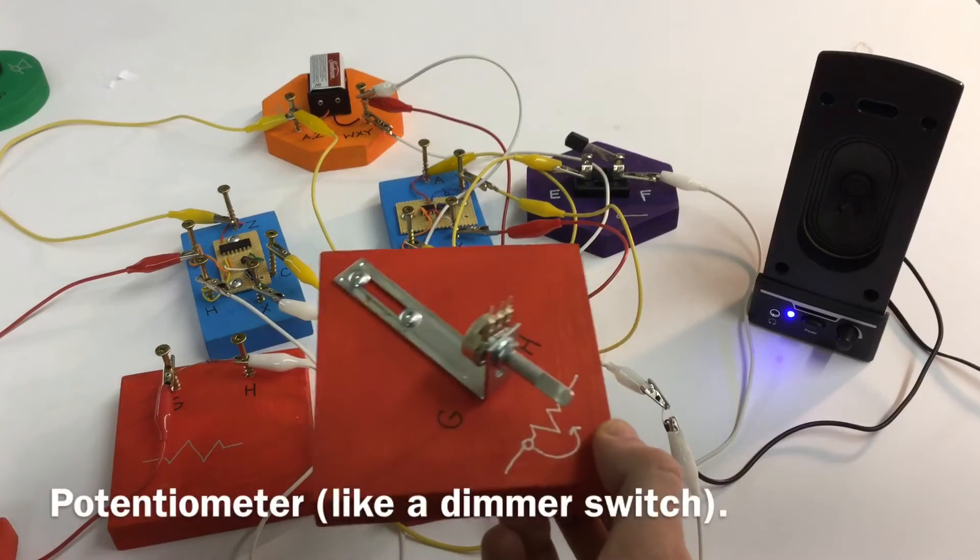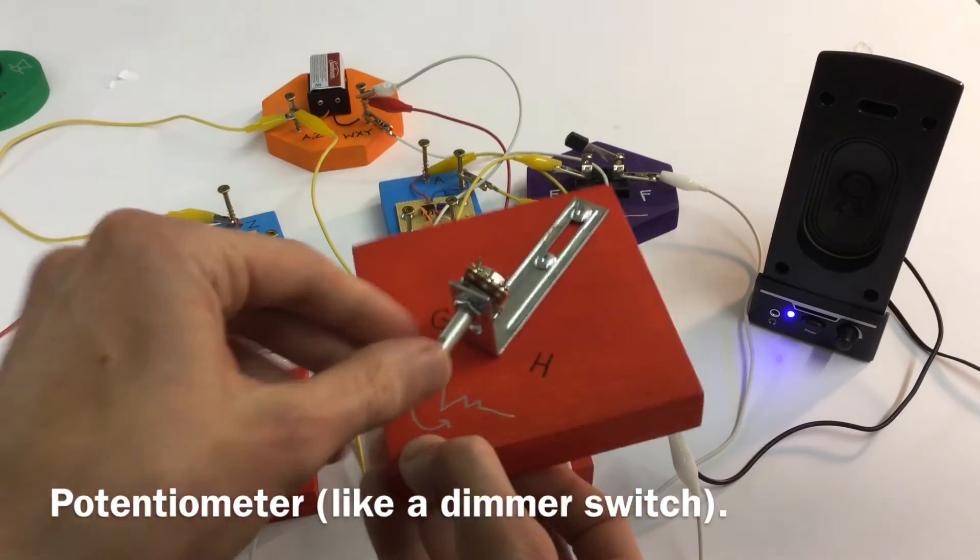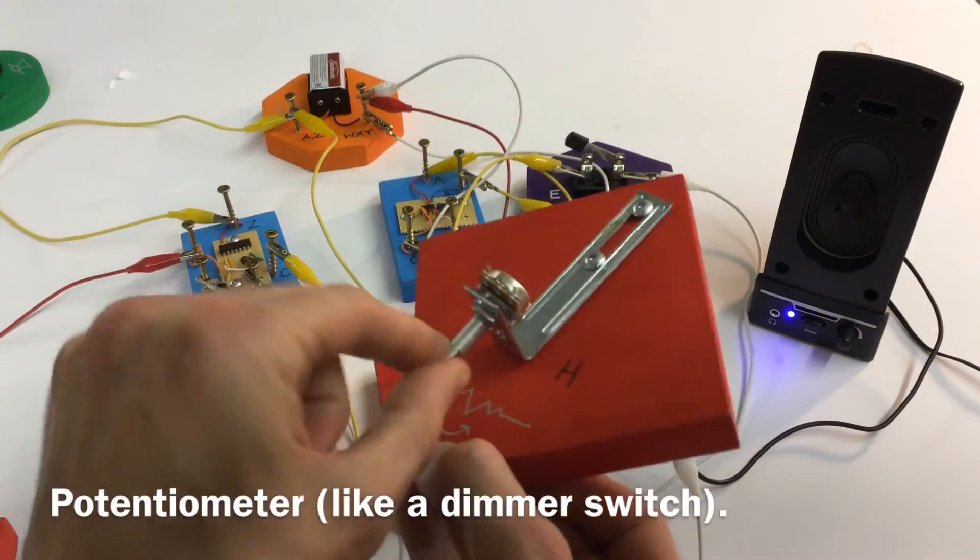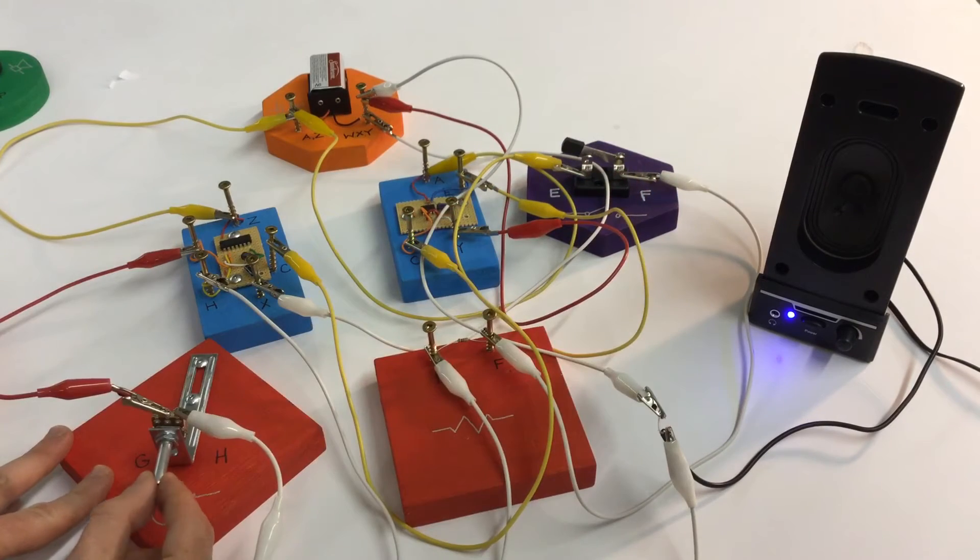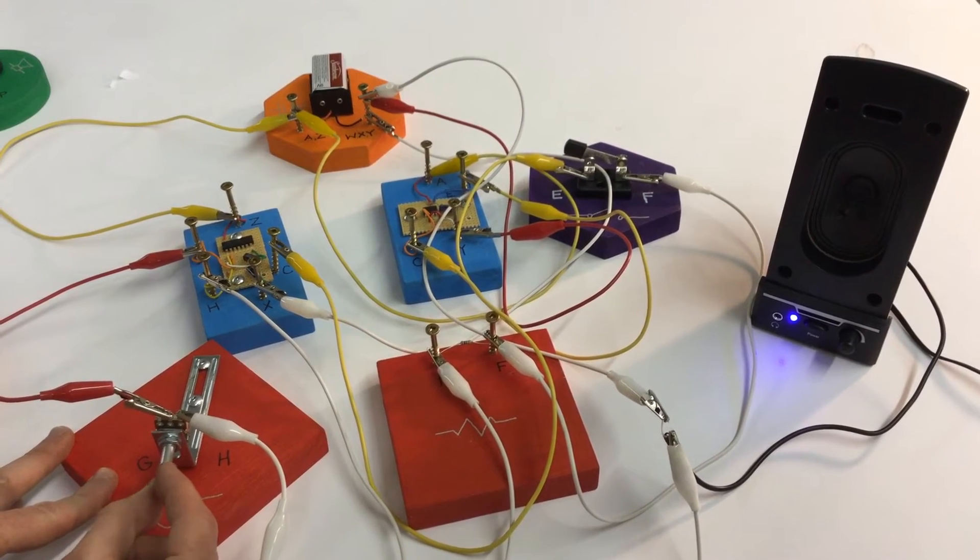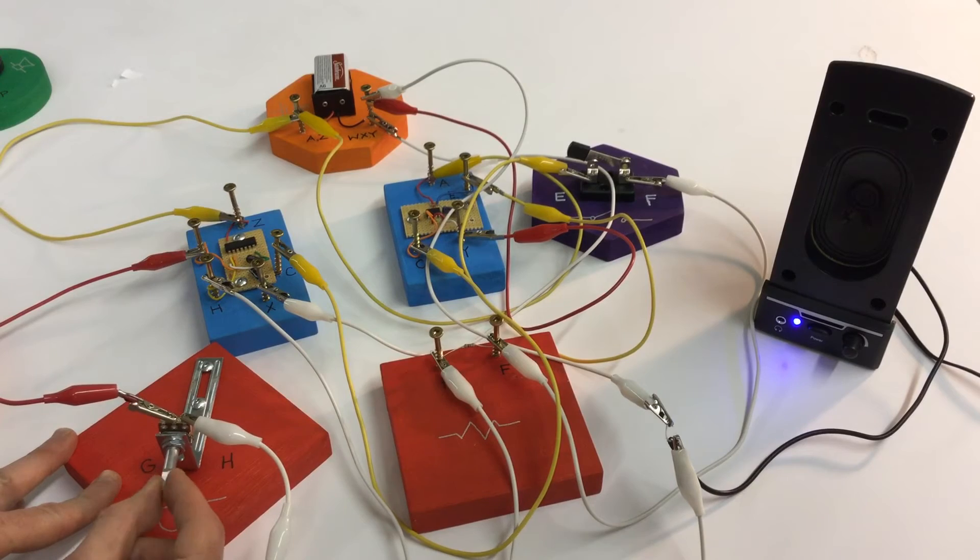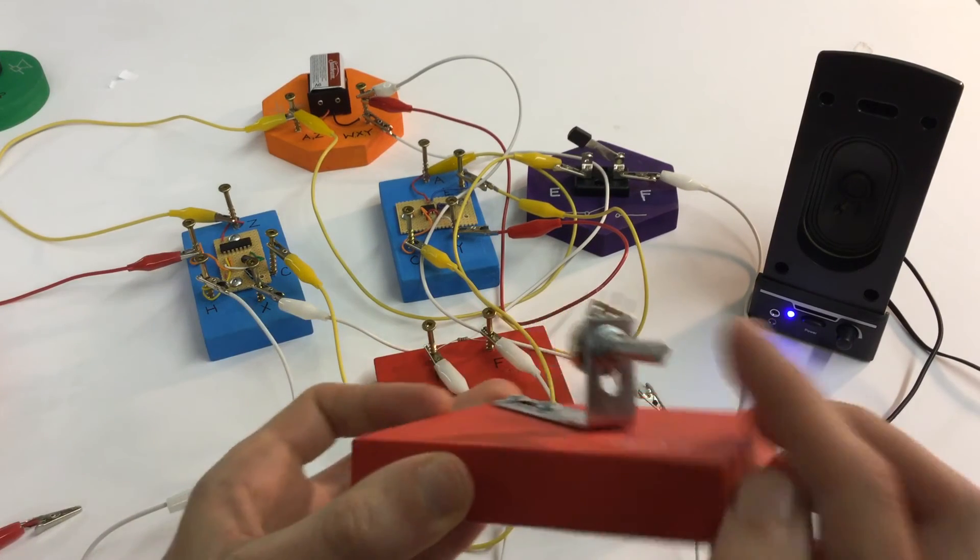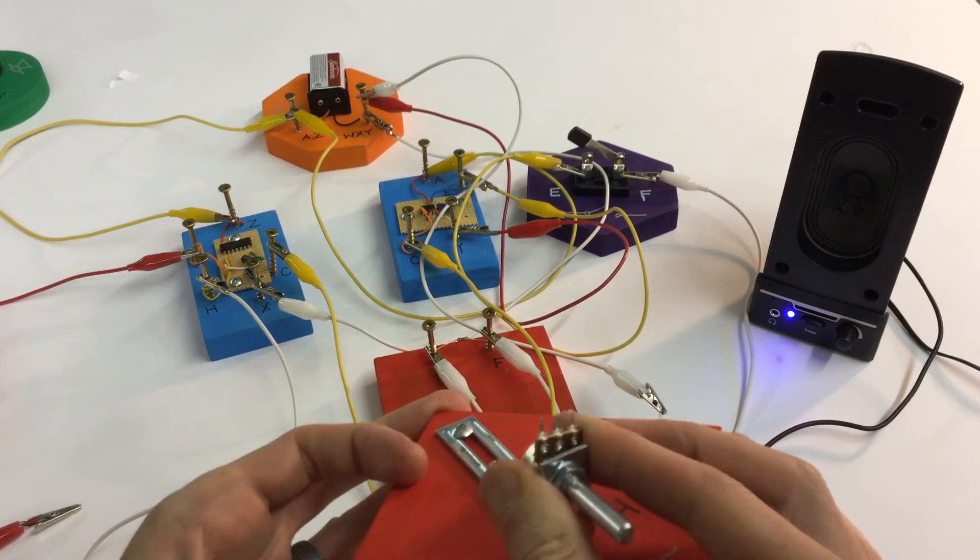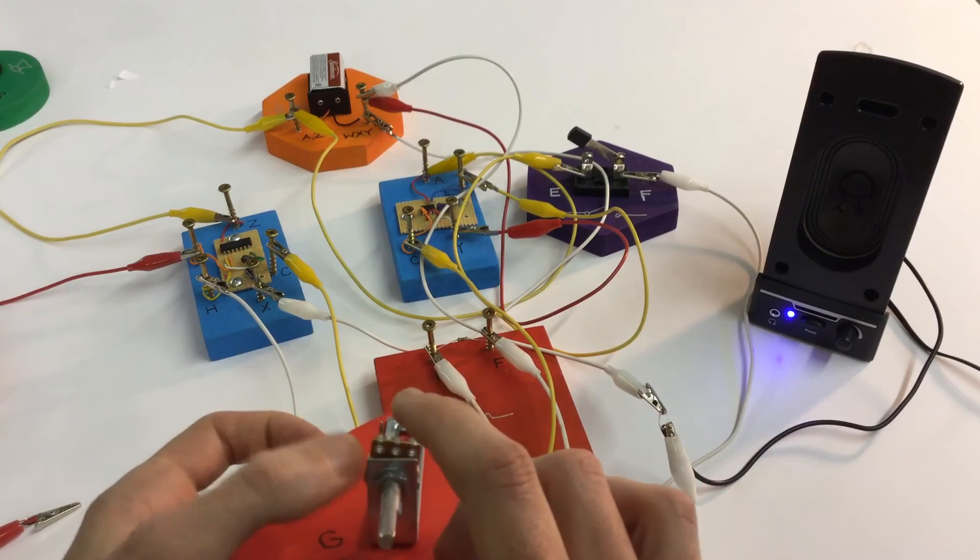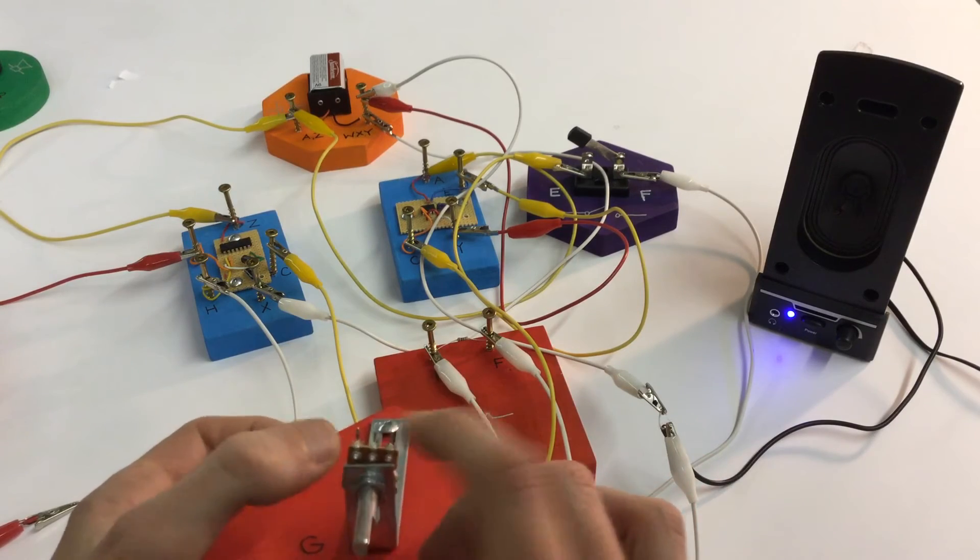They can hook up a potentiometer to change the pitch gliding around. You'll notice there's three places to plug into on the potentiometer. You should plug into the middle one and then one of the ones on the side.